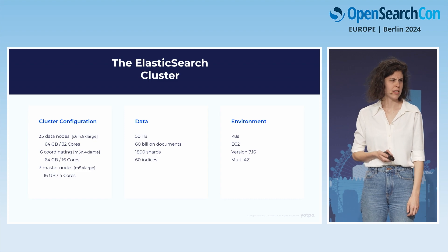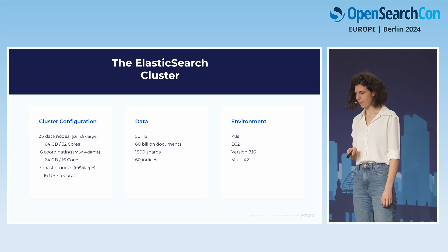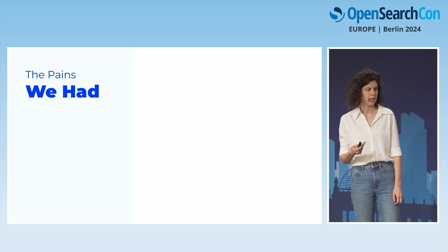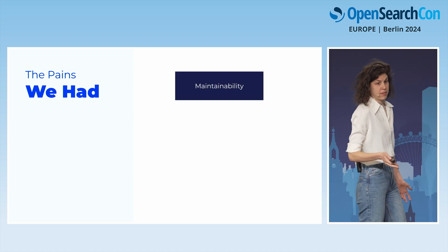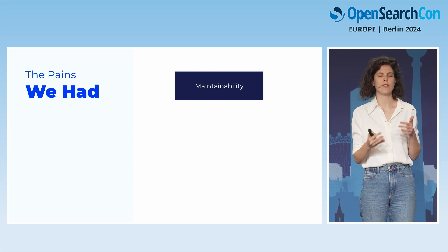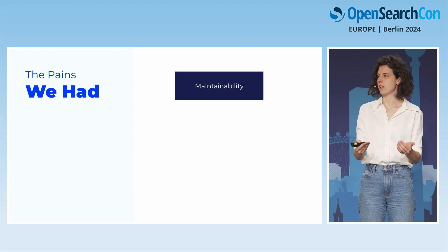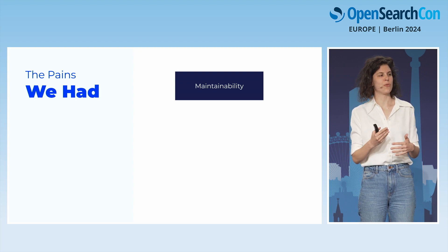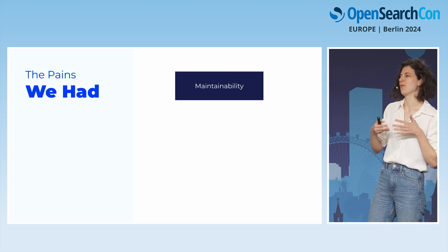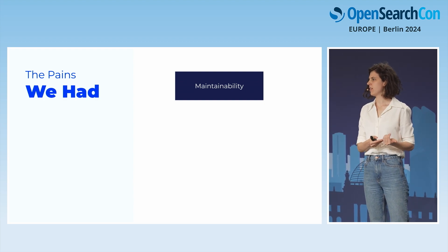The environment was running on Kubernetes with EC2, self-managed, version 7.16, in a multi-AZ configuration. The first pain was maintainability: the scale of the CDP increases year over year and also changes seasonally — Black Friday, holidays. All those scale changes required configuration changes on the cluster, which required rolling restarts. A rolling restart on a cluster with 35 data nodes and 50 terabytes was very time-consuming.